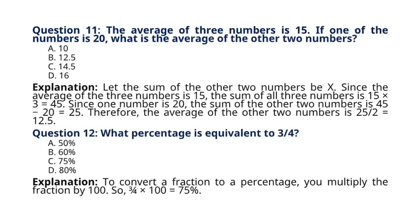Question 11. The average of three numbers is 15. If one of the numbers is 20, what is the average of the other two numbers? A. 10, B. 12.5, C. 14.5, D. 16. Explanation: Let the sum of the other two numbers be X. Since the average of the three numbers is 15, the sum of all three numbers is 15 multiplied by 3, which is equal to 45. Since one number is 20, the sum of the other two numbers is 45 minus 20, which is equal to 25. Therefore, the average of the other two numbers is 25 divided by 2, which is equal to 12.5. So the correct answer to question 11 is option B. 12.5.